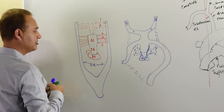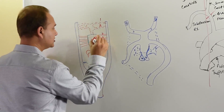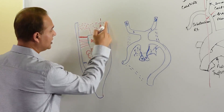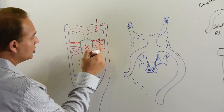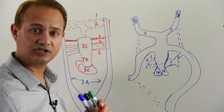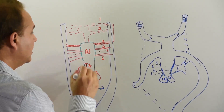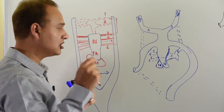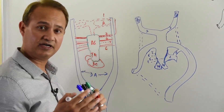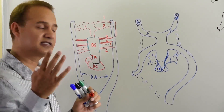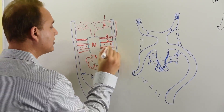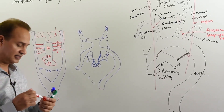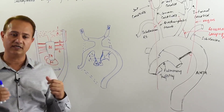The third pharyngeal arch artery is really important — it will make the common carotid and internal carotid along with the dorsal aorta. The fourth pharyngeal arch artery creates a rudimentary structure we'll discuss shortly. The fifth mostly regresses and degenerates — sometimes it develops and then degenerates, sometimes it never develops at all. The sixth will make the ductus arteriosus on the left side and regress on the right side.